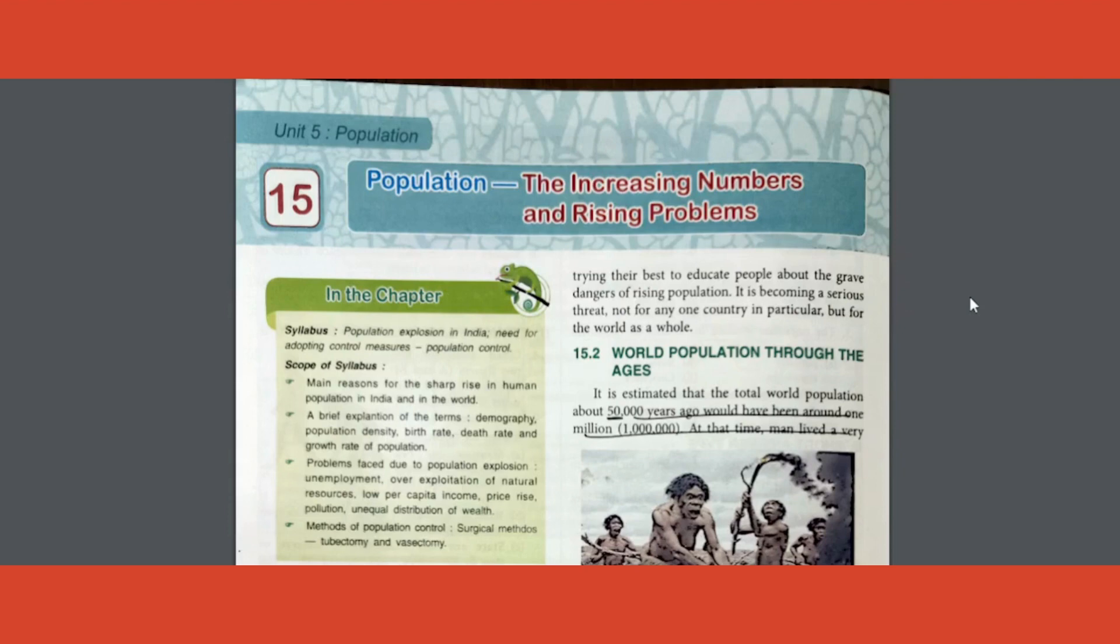First and foremost, what do you understand by the term population? Population means all the inhabitants of a particular place belonging to one group of organisms. For example, it may not be all the humans in a place, we call that as human population. It may not always be humans. All the cats in a particular area we can call as the cat population of that area.